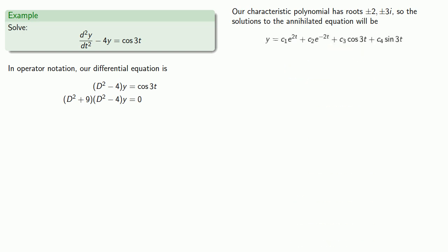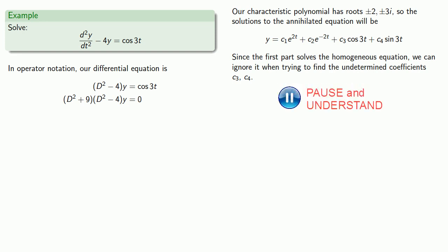And so the solutions to the annihilated equation will be y = c₁e^(2it) + c₂e^(-2it) + c₃cos(3t) + c₄sin(3t). These two roots, plus or minus 2i, come from the homogeneous equation. So this portion of the general solution is going to solve the homogeneous equation, and we can ignore it when trying to find the undetermined coefficients c₃ and c₄. Which is the same as saying they're both equal to 0 and focus on the part that came from the annihilator. So y is c₃cos(3t) + c₄sin(3t).